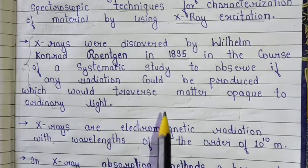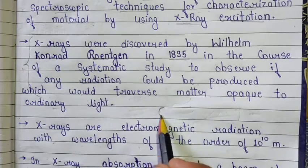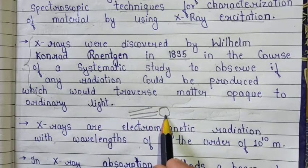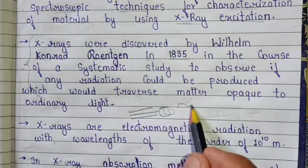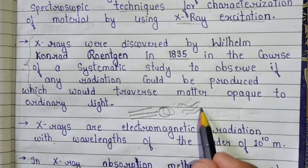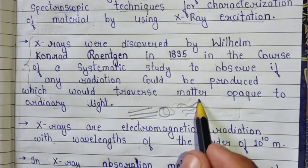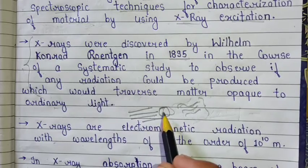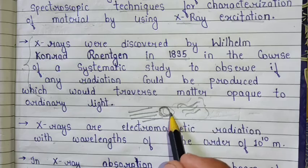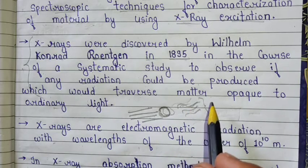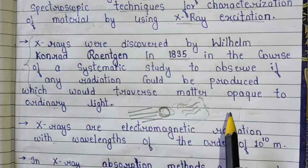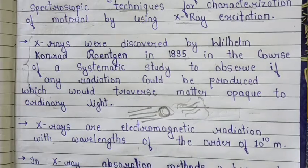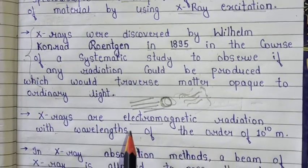He defined radiation like this: when ordinary light traverses through matter, some of it becomes opaque, and that opaque radiation is the radiation he observed. So basically, radiation is a kind of ordinary light — when ordinary light traverses through matter or a sample, it produces that radiation, and this is what Wilhelm Conrad Röntgen observed in his findings.